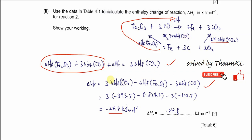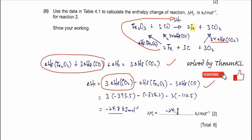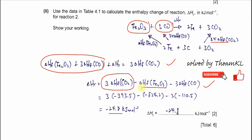If you want to calculate quickly without the Hess's cycle, use the sum of enthalpy of formations of products minus reactants. The iron is a product but its formation enthalpy is zero, so we only include CO₂. Then subtract the formation enthalpy of iron(III) oxide — one mole — and subtract three times the formation enthalpy of CO, because it is three moles. This gives the same answer: negative 24.8 kJ per mole.